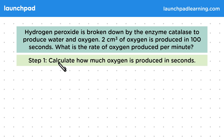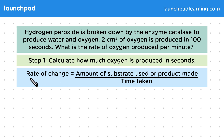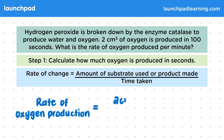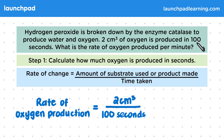The first step is to calculate how much oxygen is produced in seconds. Rate of change equals the amount of substrate used or product made divided by the time taken. The rate of oxygen production equals 2 centimetres cubed divided by 100 seconds. The 2 centimetres cubed and the 100 seconds were both provided in the question. Using a calculator, we can do this division to give us 0.02 centimetres cubed per second.